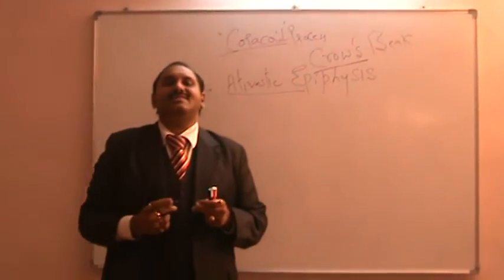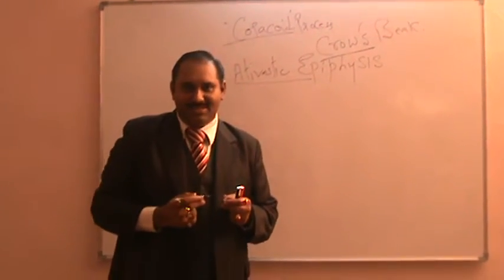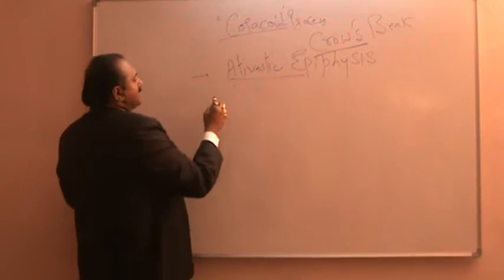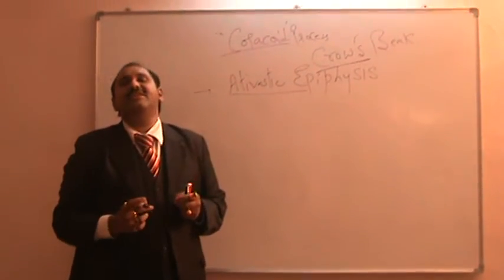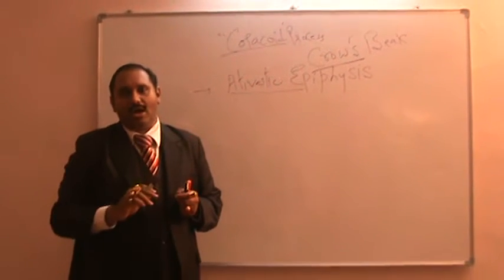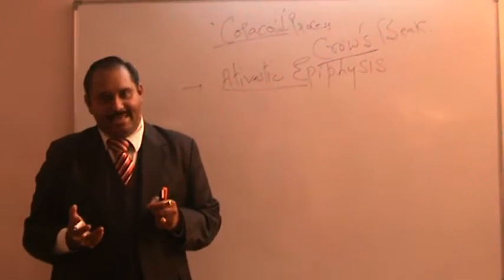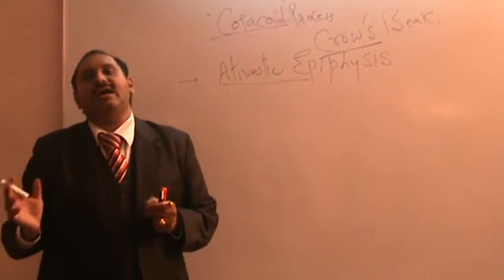Now you may ask what is atavistic epiphysis? Now atavistic epiphysis is nothing but a bone which had lost its individual identity. It lost its individual identity and it had merged with another bone. It had fused with another bone.